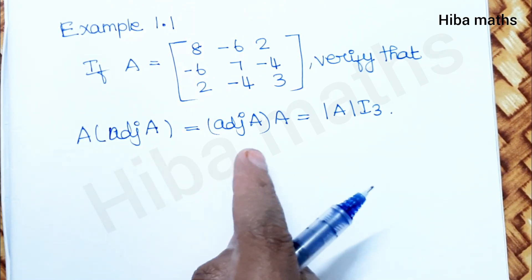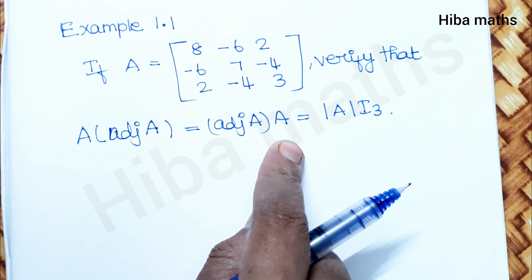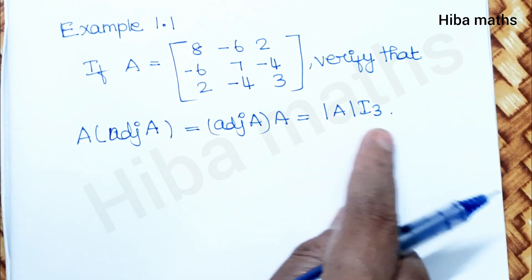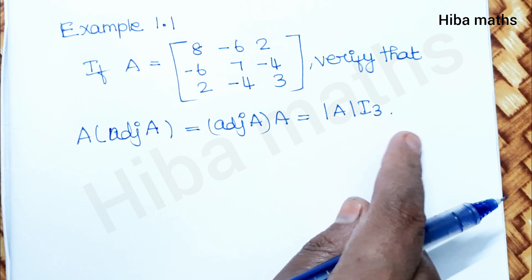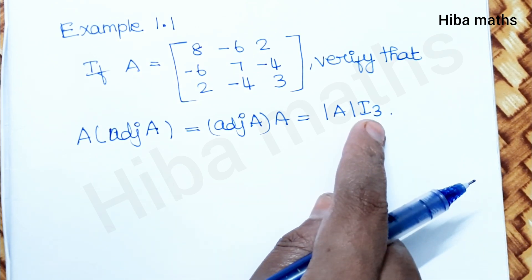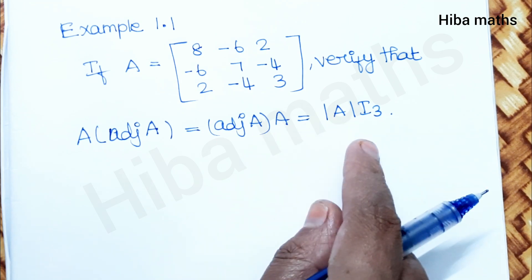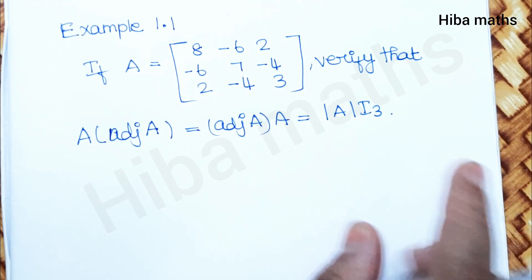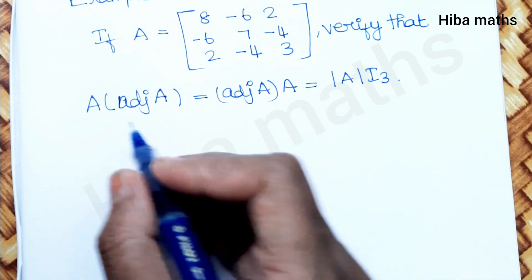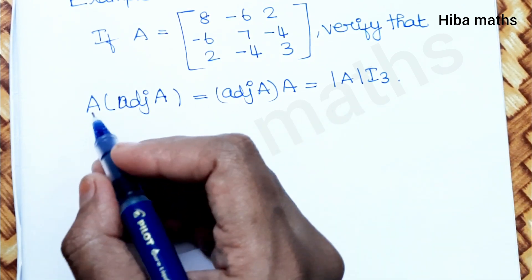So the proof: adjoint of A equals a certain matrix, and the value of modulus of A into I₃, where I₃ is the identity matrix [1,0,0; 0,1,0; 0,0,1], into modulus of A equals the same value. That is the proof of step one. First, adjoint of A is equal to modulus of A — that is the direction.